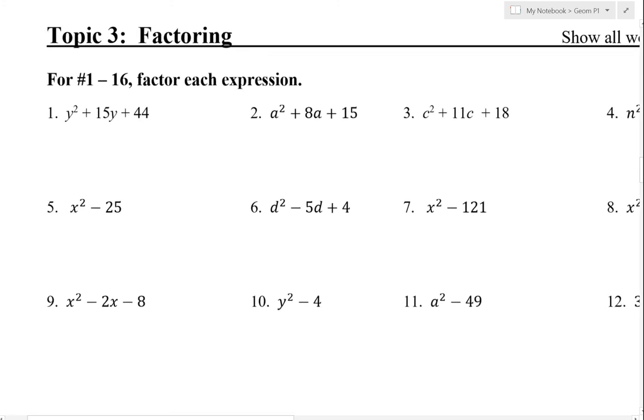So for number one, to factor this quadratic, we're going to break it apart into two binomials. We have y squared, so we need a y times y in the first spot. In the second position, we need those two numbers to multiply to 44 and add to 15, so that's going to be 11 times 4 because 11 plus 4 gives you that 15 in the middle.